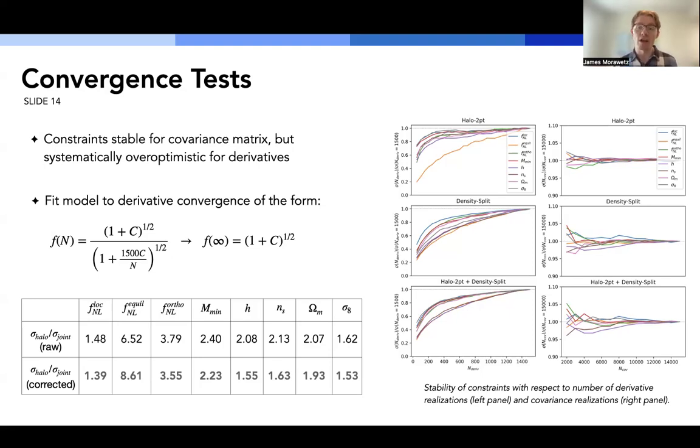And this would lead us to overestimate the relative improvement that we'd be able to achieve between these different methods. So one of the ways we can account for this is to apply a correction where we fit a model to the derivative convergence of the form shown below, and then we take the limit as the number of realizations goes to infinity and then correct for this in our constraints. And we did this in the table shown below where we have the raw constraints where no correction is applied and the corrected constraints where we apply this correction factor. And what we're considering is the ratio of the constraints between just using a halo two-point and the joint fit where we exploit the constraints of density split. And we observe across the board, we do generally get slightly weaker constraints when we apply the correction, but we do consistently observe across the board, we do get improvements on our constraints across the board.